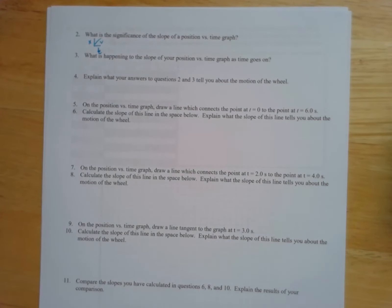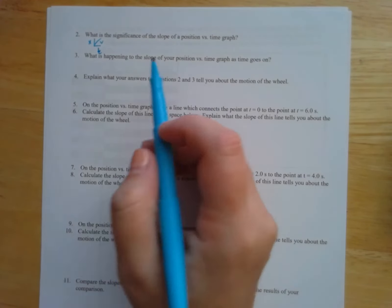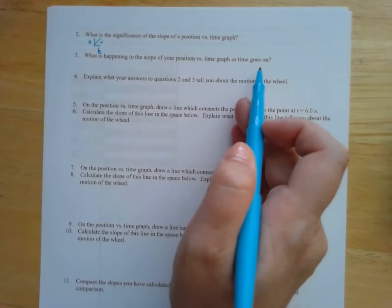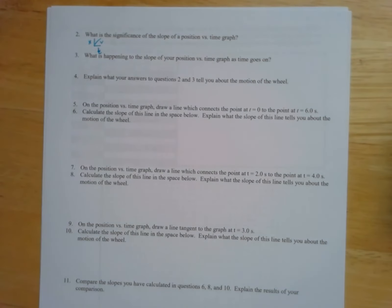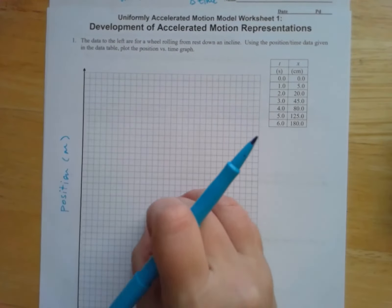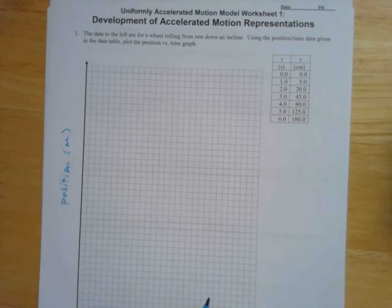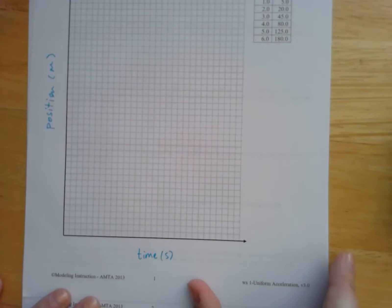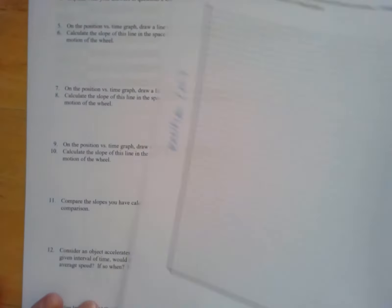These aren't meant to be super difficult. You can answer some of these with one word. What happens the slope of your position versus time graph as time goes on? Well, that's applying to this. So take a look at what the slope does on this graph as you move through time and see what you think is happening.